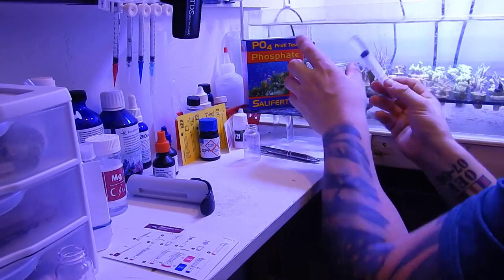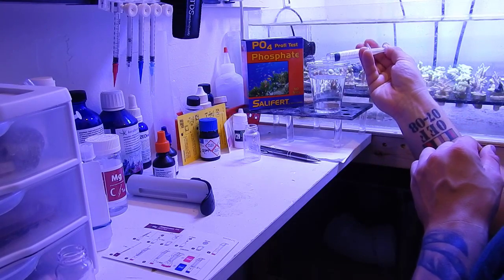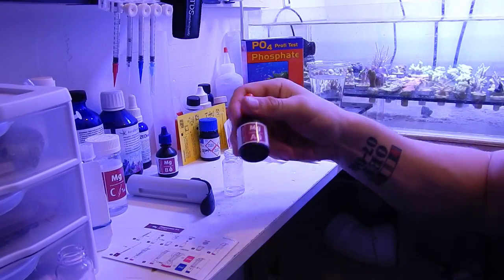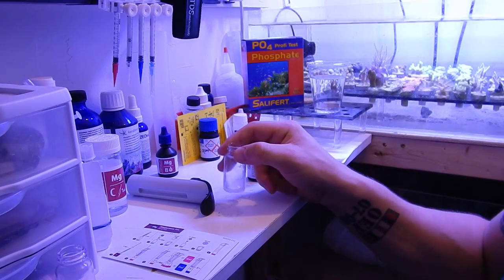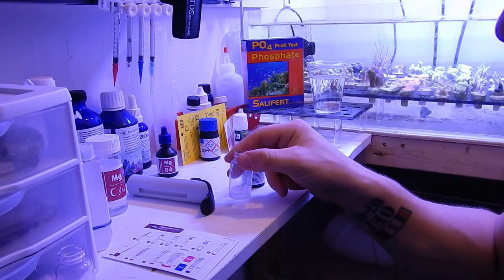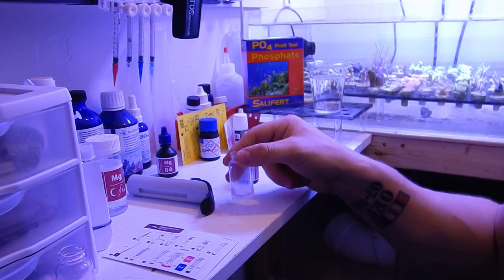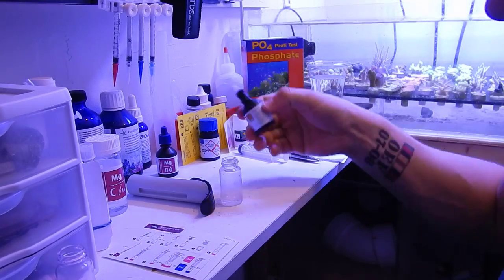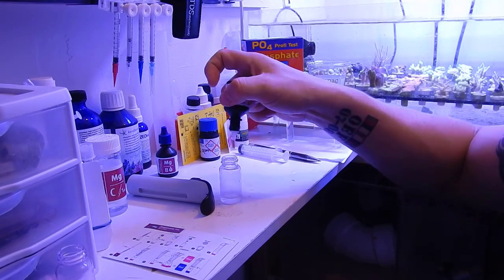Number three: when should I start testing calcium, alkalinity, and magnesium? I feel right after the cycling process is done, after you've done your big water change to get those nitrate levels down, I think that'd be a good time to test just to kind of get a base level to see where you're at. I wouldn't necessarily start throwing in SPS coral right away, but if your levels are within the appropriate range and you want to throw in soft corals, zoanthids, pulsating zeni, green star polyp, stuff like that that can tolerate some fluctuations in water parameters, by all means you should be good to go.